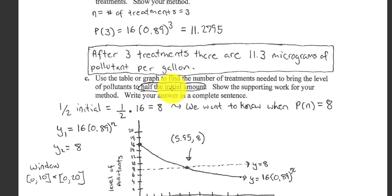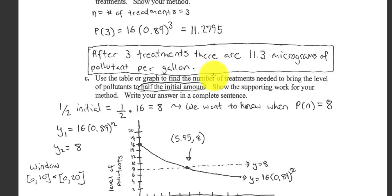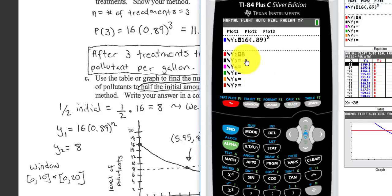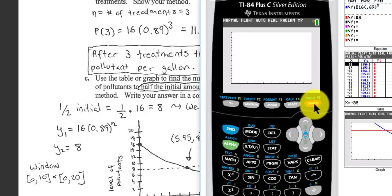Next, how long will it take or how many treatments will we need to bring the number of pollutants or the level of pollutants to half? Well, if the initial amount of pollutants was 16, half would be 8. So if we graph this in our calculator, 16 times 0.89 to the X, half of 16 is 8. Here's my window. The intersection should give me an answer. Press graph.